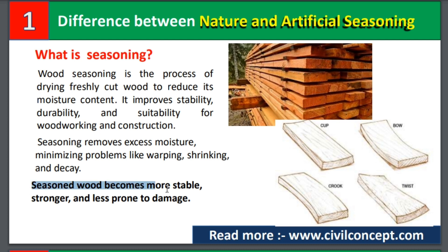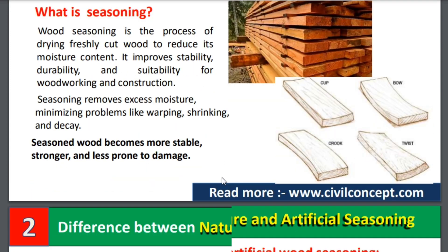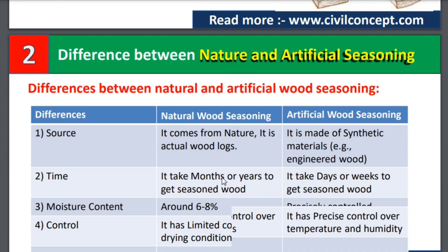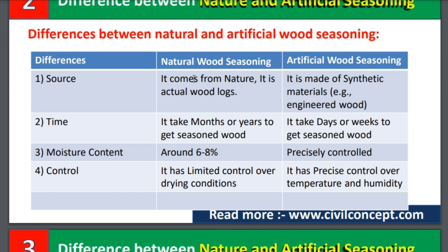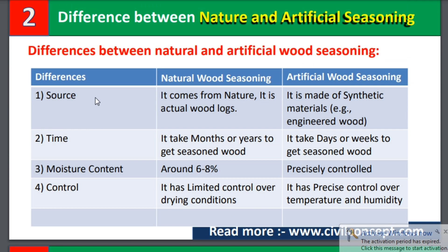Seasoned wood becomes more stable, stronger, and less prone to damage. Now let us see the difference between natural and artificial seasoning. Here, we have divided it into three column differences: natural wood seasoning and artificial wood seasoning.